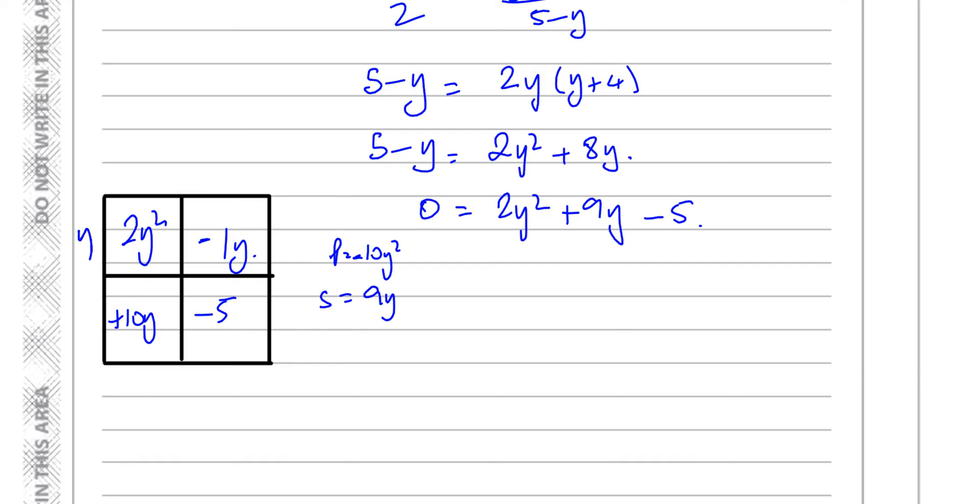So now I'm going to take out the common factor. From this, it's y. y times something gives me 2y squared. That's 2y. y times something gives me minus y. That's minus 1. 2y times something gives me plus 10y. Well, that's a plus 5. So 2y is 10y, and 5 times minus 1 is minus 5. That's correct. So now I can say that this is going to be 2y minus 1, and y plus 5 is equal to 0. So you've got y equals 1 half, and y equals minus 5.